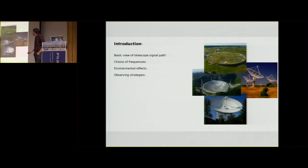I'll give you a brief overview of the signal path that the telescopes use, why we observe radio frequencies, some environmental effects that were touched on in the first lecture and how we consider these in our observations, and just some observing strategies that we might employ depending on the kind of science that we want to do.